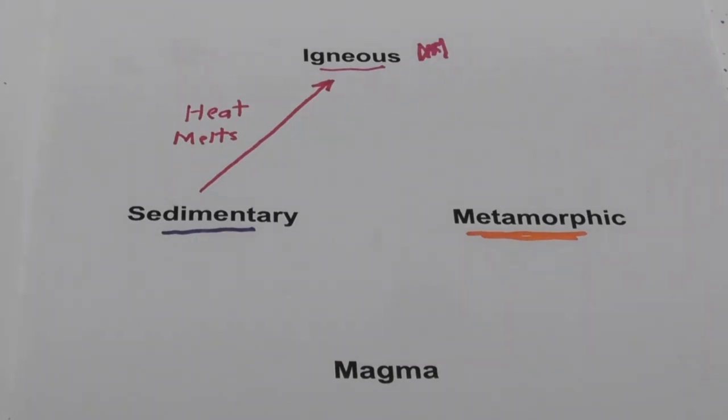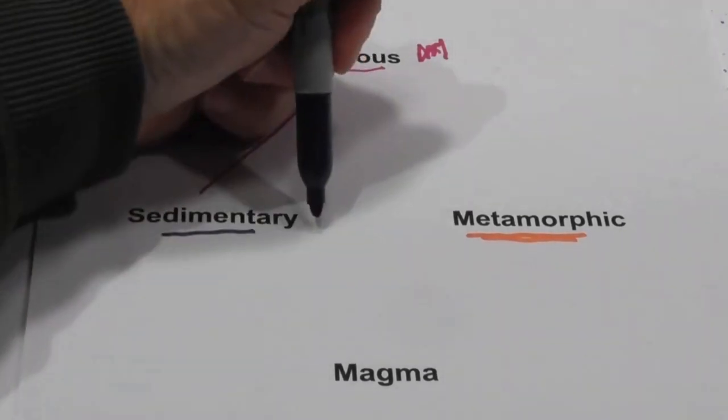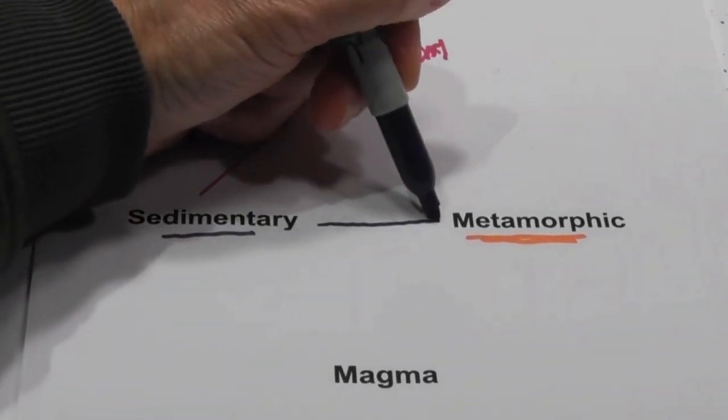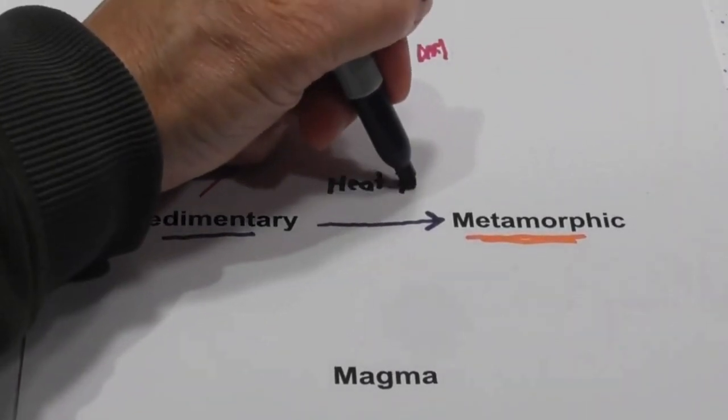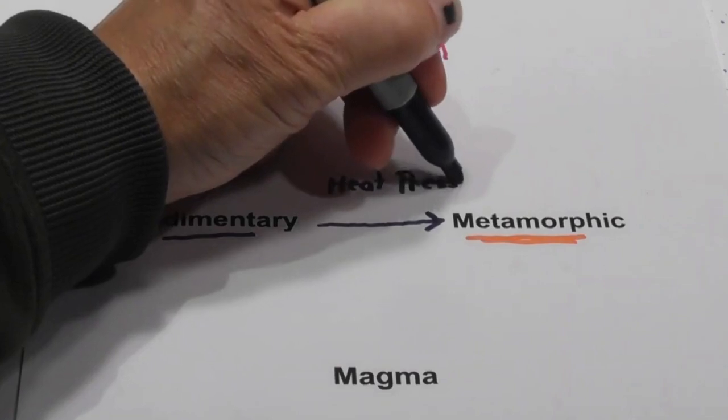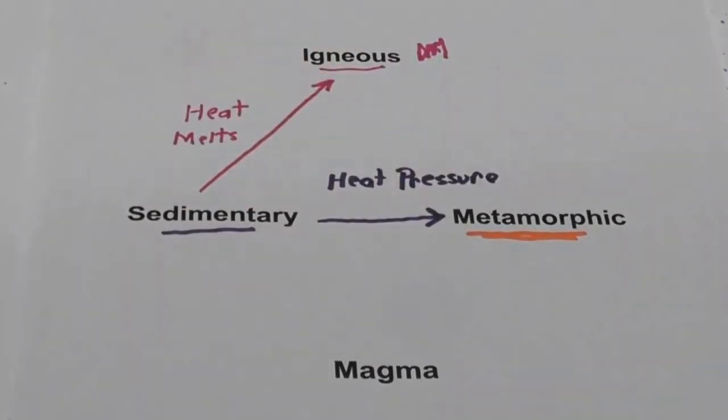So how about a sedimentary rock becoming a metamorphic rock? Well, I'm going to use a different color there, and it's going to require heat and pressure. But the heat is different than an igneous rock because it does not melt it completely.